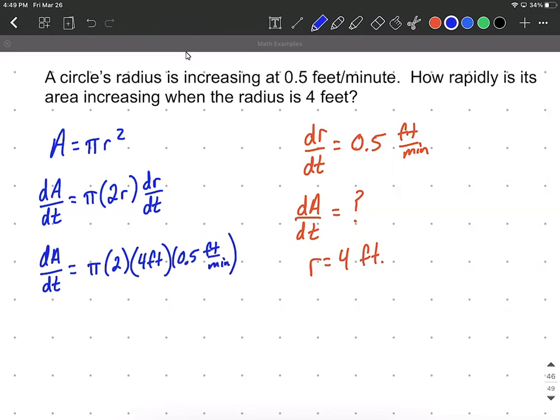Now it's just a matter of simplifying. We have 2 times 4 times 0.5 which is 4π, and then our units as we multiply those is going to be feet squared per minute for dA/dt.